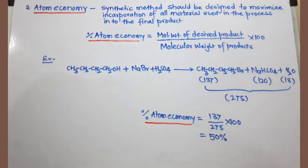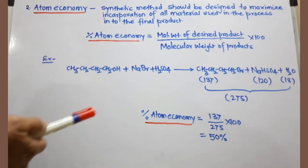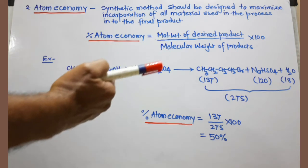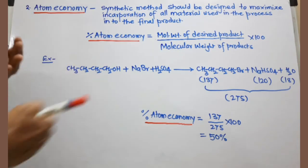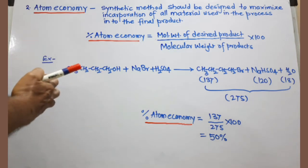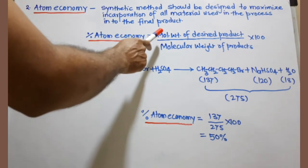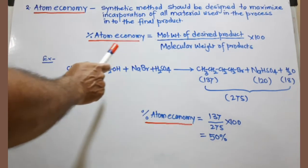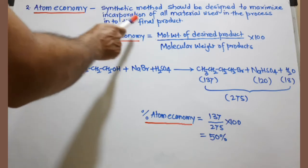The second principle of green chemistry is atom economy. This says we should develop synthetic methods that maximize the incorporation of all starting materials into the final product. If this is achieved, waste is automatically decreased. To quantify this, the term 'atom economy' is used: percentage atom economy = molecular weight of the desired product divided by molecular weight of all products (including desired product and waste), multiplied by 100. This value should be as high as possible.